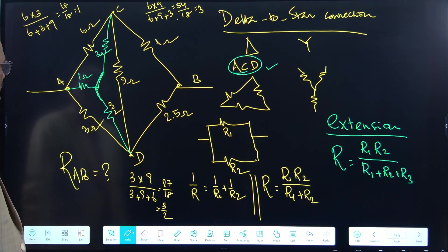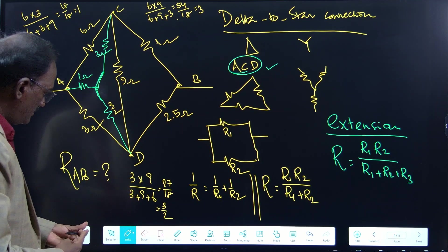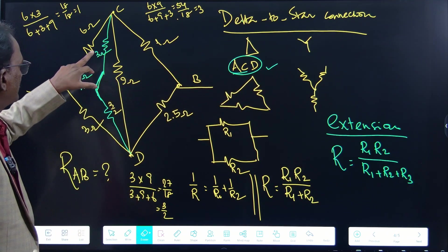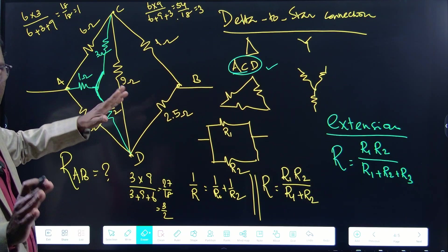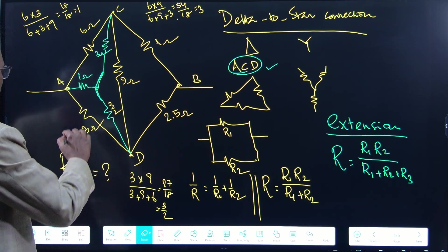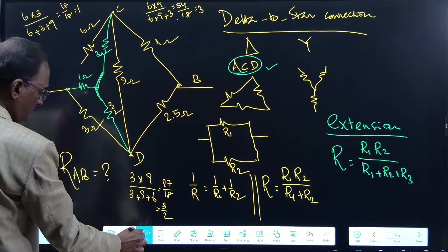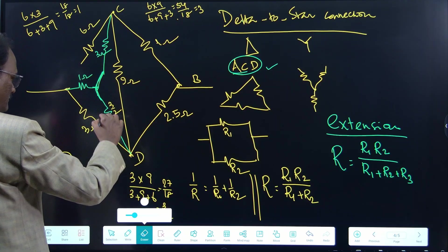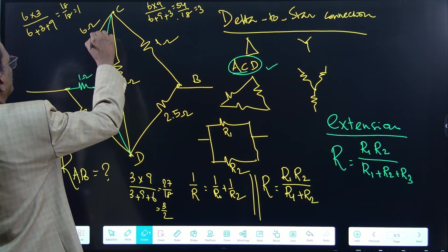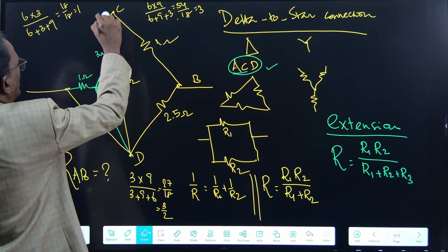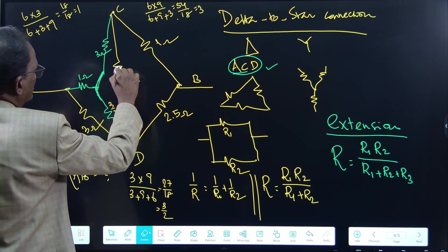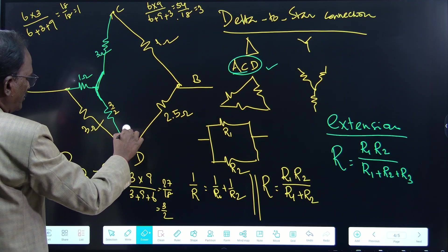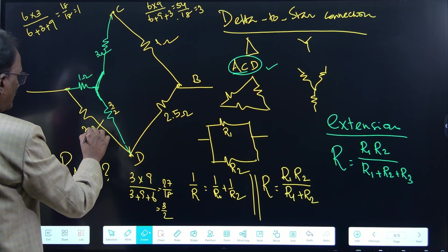The ACD delta is now converted into an equivalent star. The original 6 ohms, 9 ohms, and 3 ohms of the ACD delta are removed from the circuit and replaced by the three new star resistors: 1 ohm at A, 3 ohms at C, and 1.5 ohms at D.